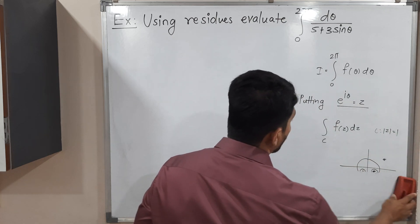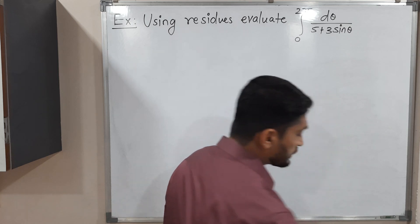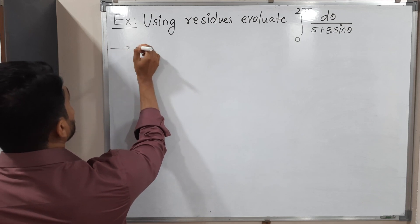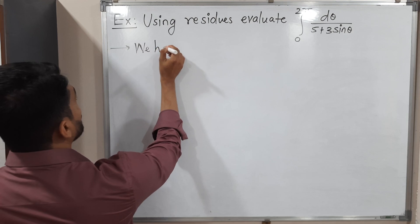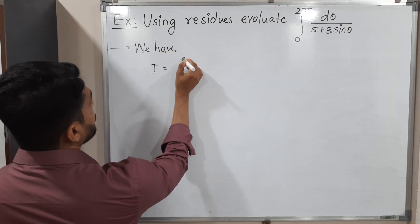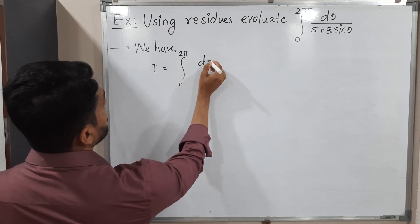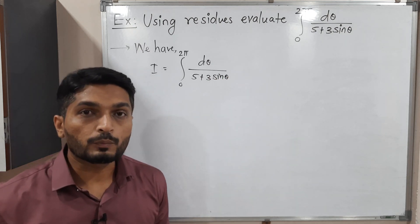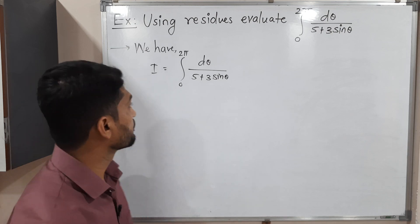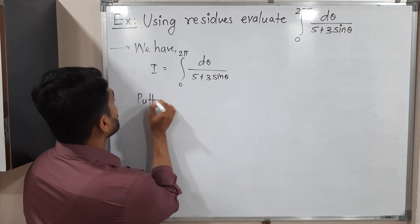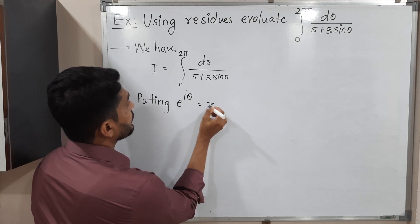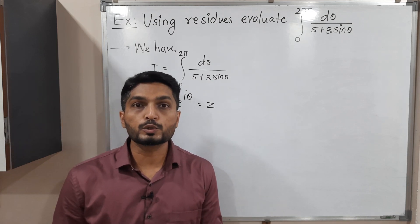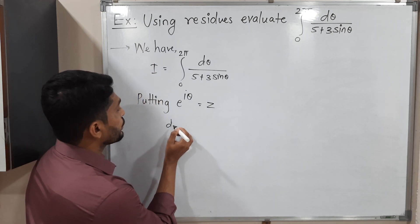Let us now solve the problem. We call the given integral I, so I = ∫₀²π dθ / (5 + 3 sinθ). As stated earlier, we put e^(iθ) = z. After substitution we differentiate both sides with respect to θ.